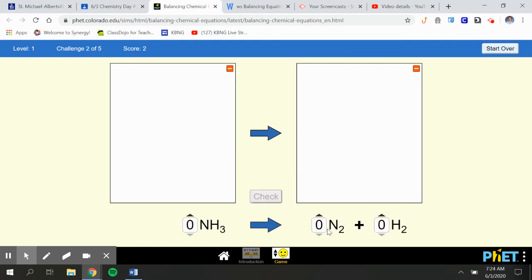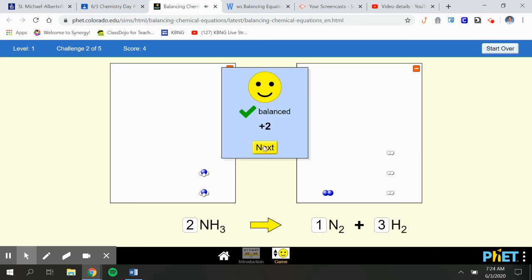Over here, we have NH3 plus H2. I'm going to put a 2 in front of there. I'm going to put a 1 there. So we have two Ns on this side. Now we have two Ns because 1 times 2 is 2. And we have six Hs over here. So I'm going to put 3 here to see if that works. So 3 times 2 is 6. Great, it works.